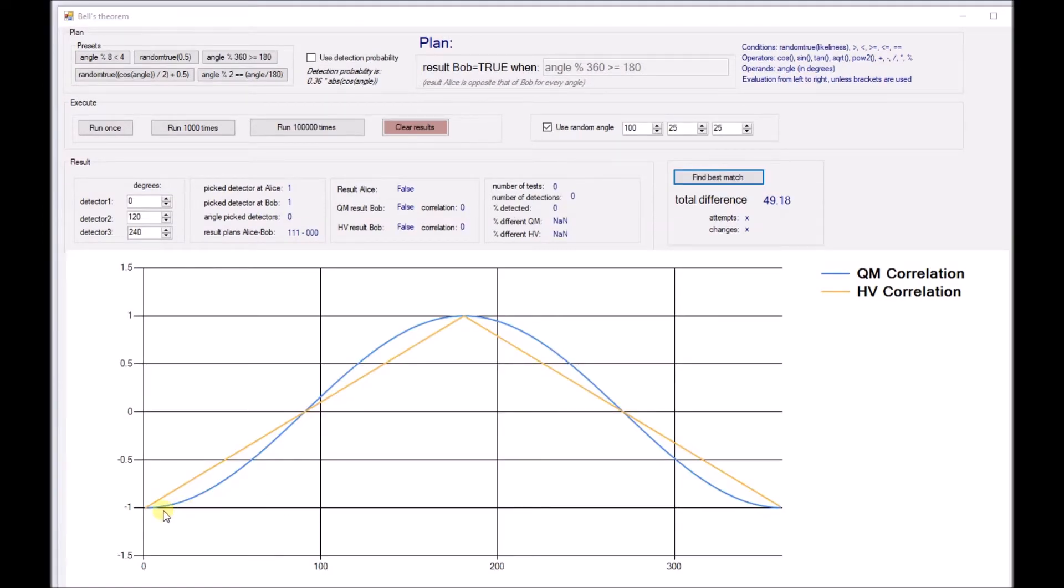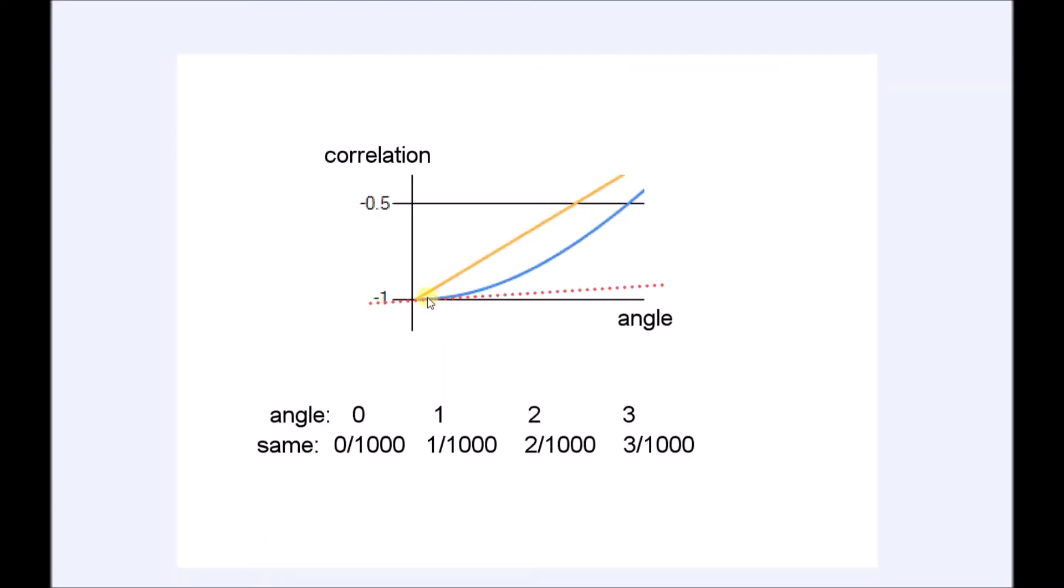Why we cannot obtain the result of quantum mechanics using local hidden variables. For that, let's take a closer look at the graph at angles around zero. Over here, the graph is almost horizontal, meaning that although the angle changes quite a bit, the correlation almost doesn't change at all.